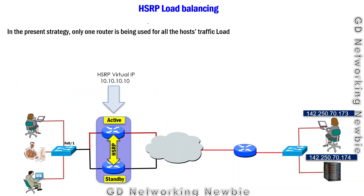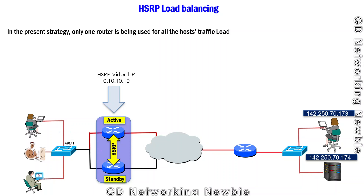Regarding load balancing: at this point we might feel we are wasting resources, since one router is in standby and doing nothing while all traffic flows through the active router. To make use of the second router, we can introduce load balancing so both routers are actively forwarding traffic.